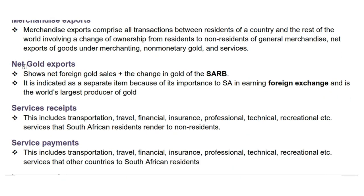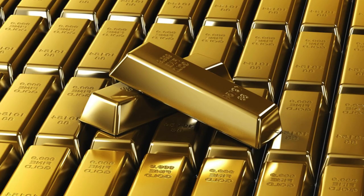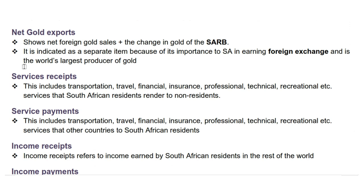Next we will look at net gold exports. You may wonder why it's recorded separately from merchandise exports, since it fits the description of merchandise export. It shows net foreign gold sales plus the change in gold reserve of the South African Reserve Bank. It is indicated as a separate item because of its importance to South Africa in earning foreign currency, as South Africa is the world's largest producer of gold. Note that it is a common exam question.